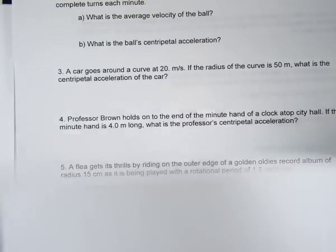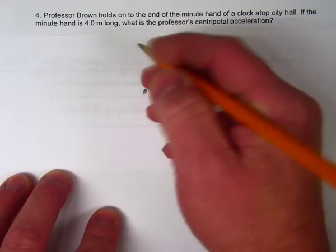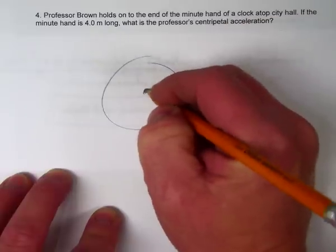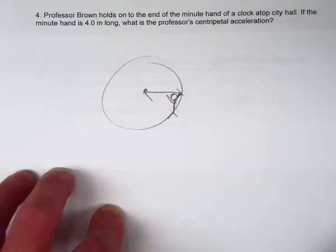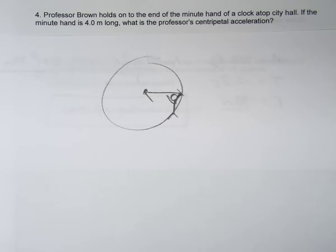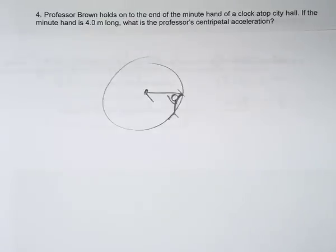Number four involves Professor Brown hanging from a clock tower - from the big hand and little hand. He's hanging from the minute hand. Since they go out of their way to say it's a minute hand, there's some information you know - like how long does it take the minute hand to go around the clock? Sixty minutes.